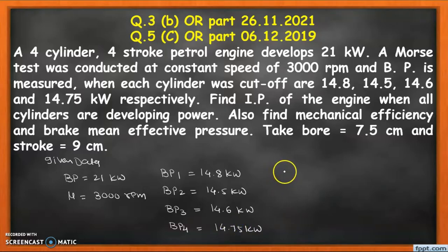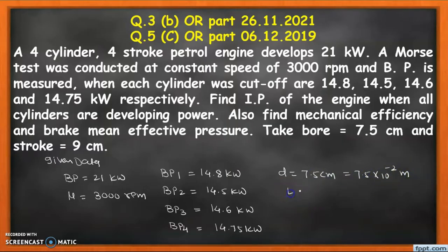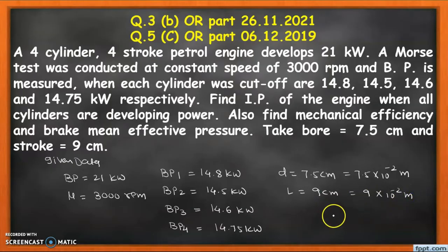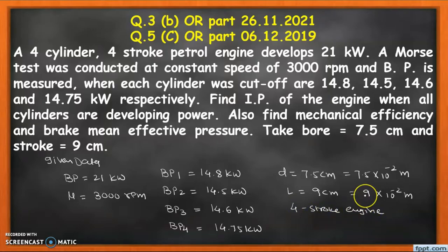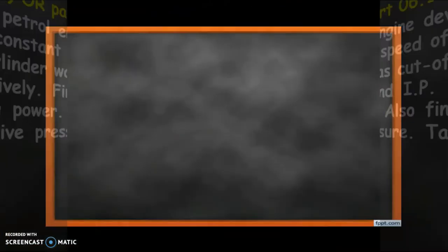The diameter of the bore is 7.5 centimeters, which is 7.5 × 10⁻² meters. The stroke length is 9 centimeters, which is 9 × 10⁻² meters. One more piece of information: the engine is a four-stroke engine. Now we apply the Mohr's test method to calculate the indicated power when each cylinder is cut off.